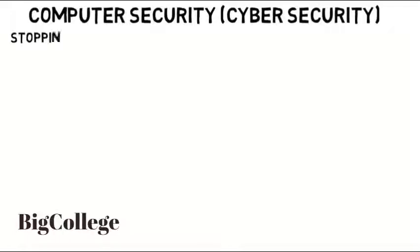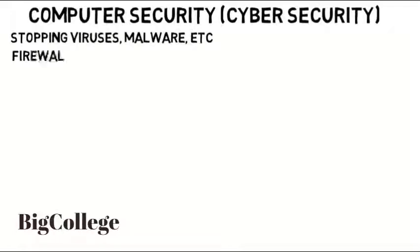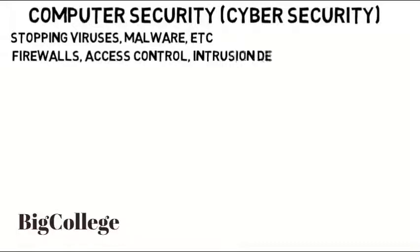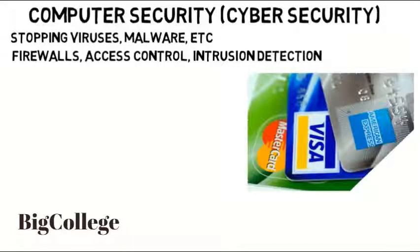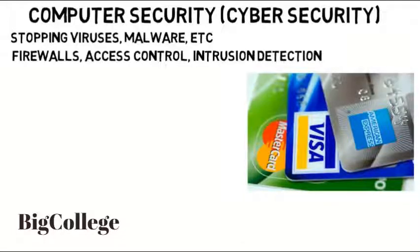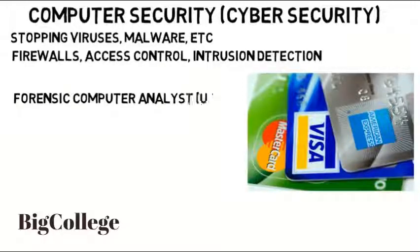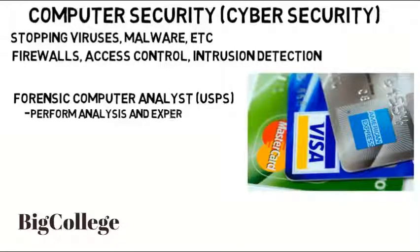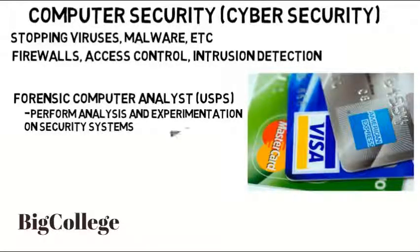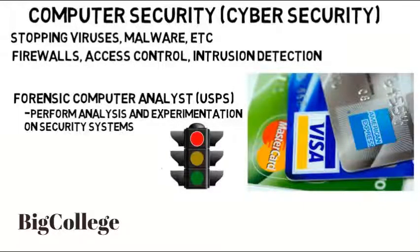Then there's computer security, also known as cybersecurity, which is more about stopping things like viruses and malware — about firewalls, access control, intrusion detection, and more, rather than just encrypting data. This could apply to nearly any company. Large companies like Target and Home Depot have been targets of security breaches that compromise customers' credit card information. Self-driving cars are also going to need more and more security because it's possible for them to be hacked. Government organizations obviously need secure information. I even found a job listing as a forensic computer analyst for USPS to perform analysis and experimentation on security systems. Even systems used to control traffic lights need to be safe from cyber threats.